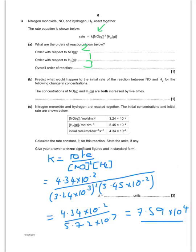So the concentration of NO and H2 are both increased by 5 times. So if they're both increased by 5 times, that's going to be 5 squared times 5, which is 5 cubed, which is 125. So the rate of reaction would increase by 125.